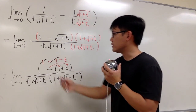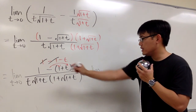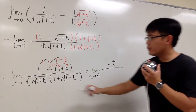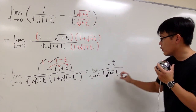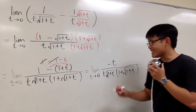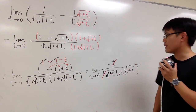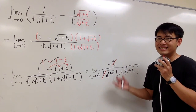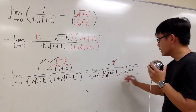We distribute the negative, so we technically have 1 minus 1 minus t. As you can see, 1 minus 1 is just 0, so this becomes the limit as t goes to 0 with negative t on top and t times square root of 1 plus t times 1 plus square root of 1 plus t on the bottom. The t on top and the t on the bottom cancel each other out — this is the major cancellation — leaving just negative 1 on top.